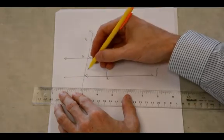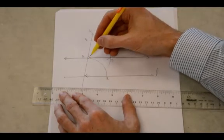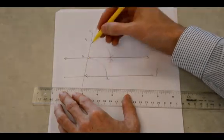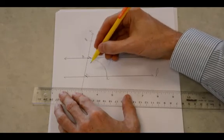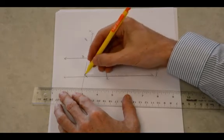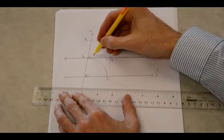Remember, an angle is a rotation of a ray. So these angles are exactly the same. They are corresponding. Note the positions of these. They are both in the upper right-hand corner of the intersection. Those angles are congruent.